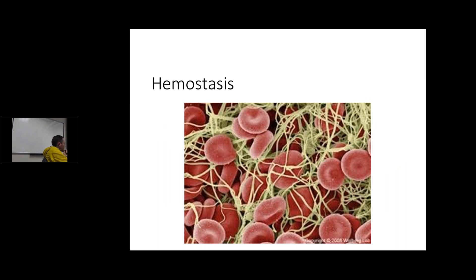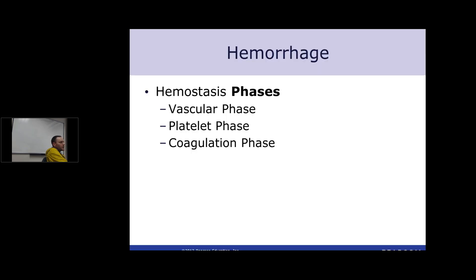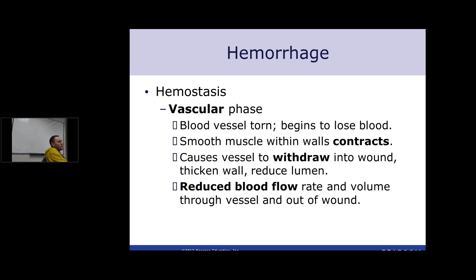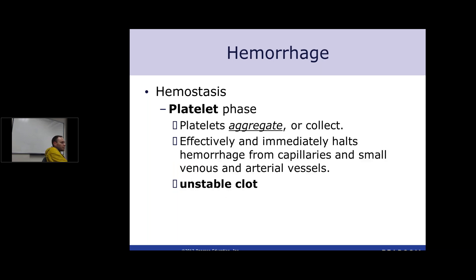Hemostasis has three phases: vascular, platelet, and coagulation. The vascular phase occurs when a blood vessel is injured — it constricts to slow blood flow and minimize loss. The platelet phase involves aggregation and clumping of platelets — forming an unstable clot. It's unstable because it has not been reinforced with a fibrin matrix. It can halt hemorrhage, but that clot can easily be disrupted and patients start bleeding again until a good fibrin clot forms.